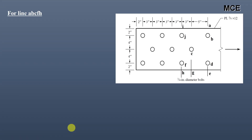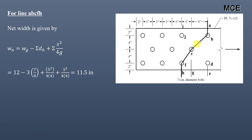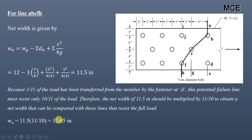The next failure line is A-B-C-F-H. This is also a staggered failure line with two types of staggered pitch, passing through three bolt holes. S for segment B-C is 5 inch and S for segment C-F is 3 inch. The net width = 12 − 3×(7/8) + 5²/(4×4) + 3²/(4×4) = 11.5 inch. Again, 1/11 of the load is already transferred, so this line resists only 10/11 of the load. Multiplying by 11/10 gives an adjusted net width of 12.65 inch.